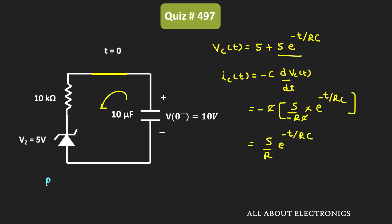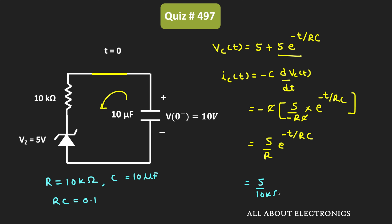The value of R is equal to 10 kilo ohm and C is equal to 10 micro Farad, which means RC equals 0.1. Substituting R and C into the expression, we get 5 divided by 10 kilo ohm times e to the power minus 10 times T, which equals 0.5 times e to the power minus 10T milliampere. In this way, we got the expression for the capacitor current.